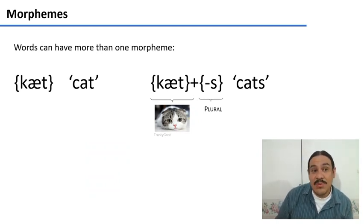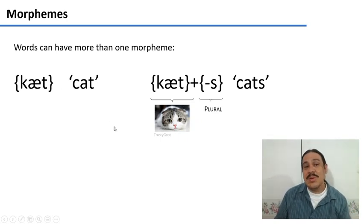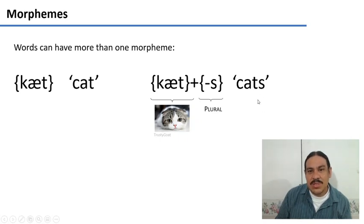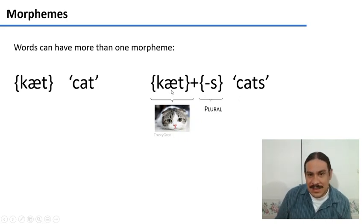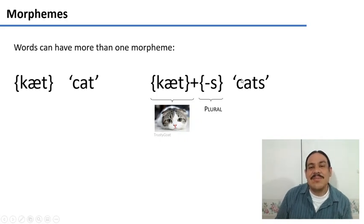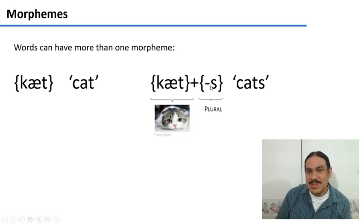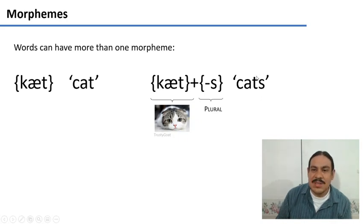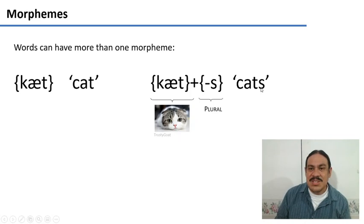Words can be composed of one morpheme, like 'cat,' but they can also have more than one. For example, in 'cats,' you can separate that word into two bits, and each of those bits has meaning. The first three phonemes are 'cat,' the morpheme associated with the creature. The final phoneme is 's,' which means plural — there are many cats. This word has two parts with clearly separable meanings: the first part is the meaning of the creature, the second is how many — lots. The cat and the plural.